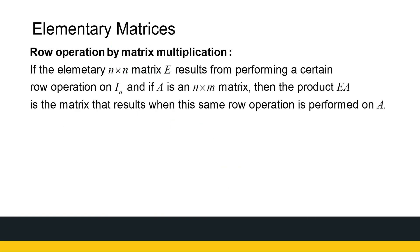If I perform a row operation on any matrix, that is the same as multiplying that matrix with the corresponding elementary matrix. So rather than doing a row operation, we can do a matrix multiplication. Note that a row operation is easier to perform, but this explains what the row operation actually is in terms of matrices.